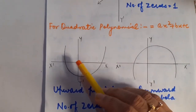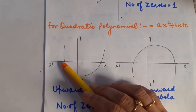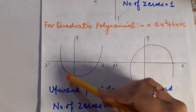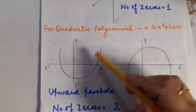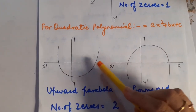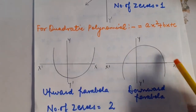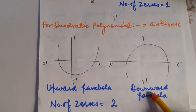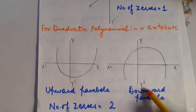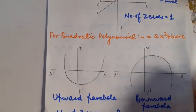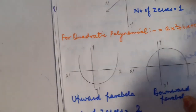Children, here you can see that the parabola is going to intersect the x-axis at two points. So, how many zeros does it have? Definitely, the quadratic polynomial will have two zeros.